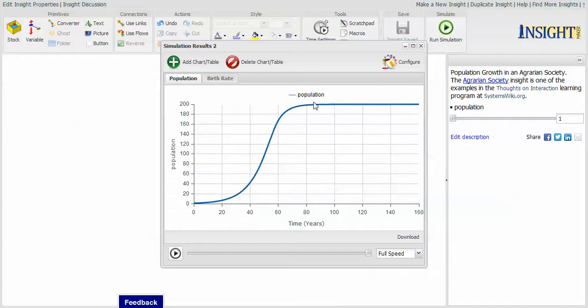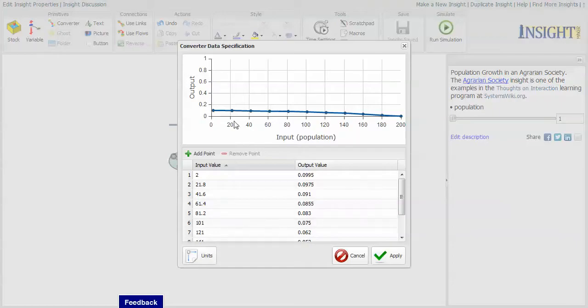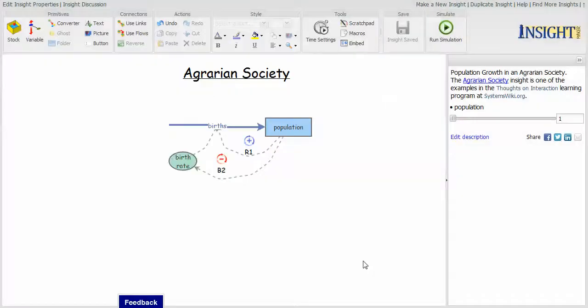When we run this model, you notice that the population demonstrates an exponential increase until it gets to a certain point, and then it levels out and declines simply because of the way that the birth rate function is dependent upon the population. So here is an example where the input is population as opposed to a time-valued input to a converter.